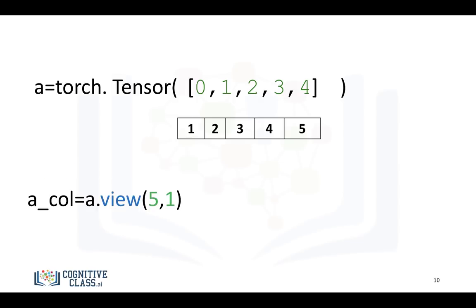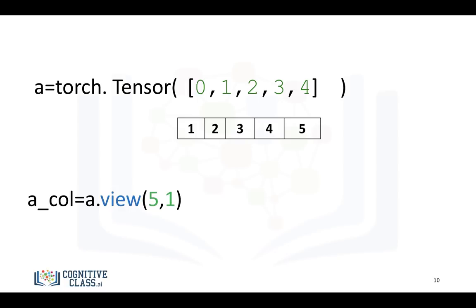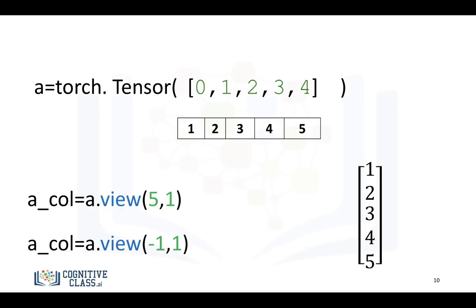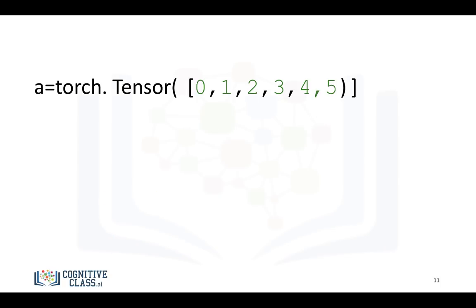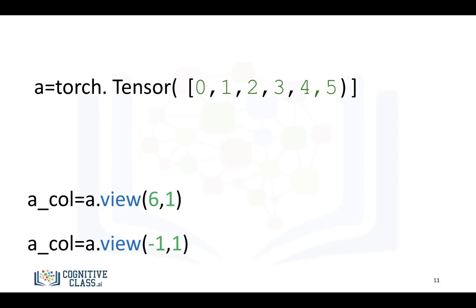Another thing we can do is reshape a tensor. In this case, the tensor is basically one element long, and we can convert it to a column tensor by using the command view(). It's helpful to visualize it as a column. Just a note: we can use the argument negative 1 if we don't know the actual size of the tensor. For example, if we have 6 elements, instead of putting a 6, we put a negative 1, and we don't have to worry about the size. This will come in handy throughout the course.